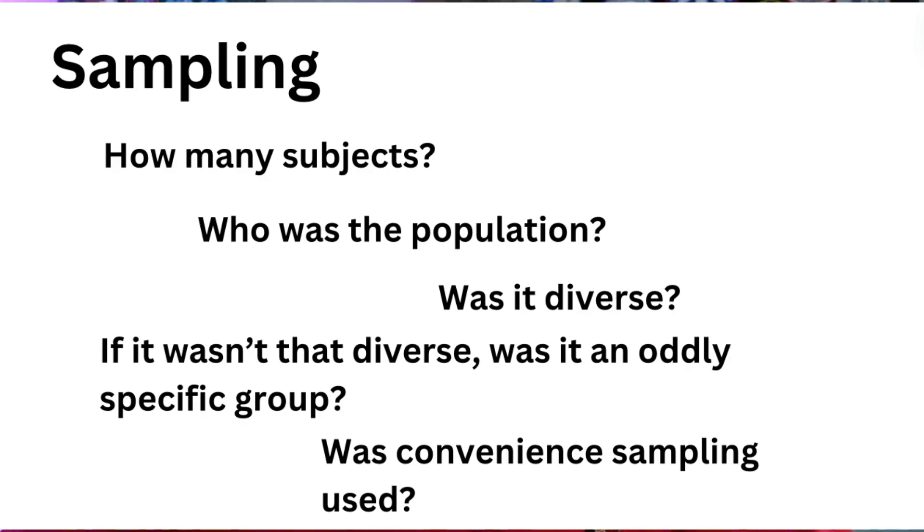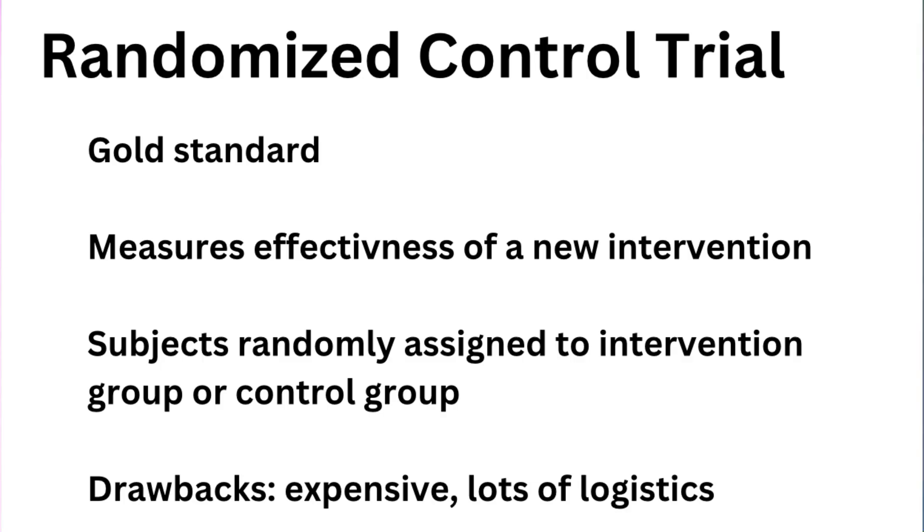Did the researchers use convenience sampling, which is exactly what it sounds like? A couple of years ago I did a little study of my own looking at first-pass success rates in pre-hospital intubation. I looked at my department — it was right there, convenient, and I had easy access to all the data. Was my study rendered useless? No, but it does take away from the generalizability, and it is another factor of many to consider. Also, what approach were the authors using? The gold standard is a double-blinded prospective randomized control trial, but there are certainly other valuable methods: meta-analysis, where they take past studies and meld them together to extrapolate insights; retrospective studies looking at past data; surveys; case reports; or literature reviews.